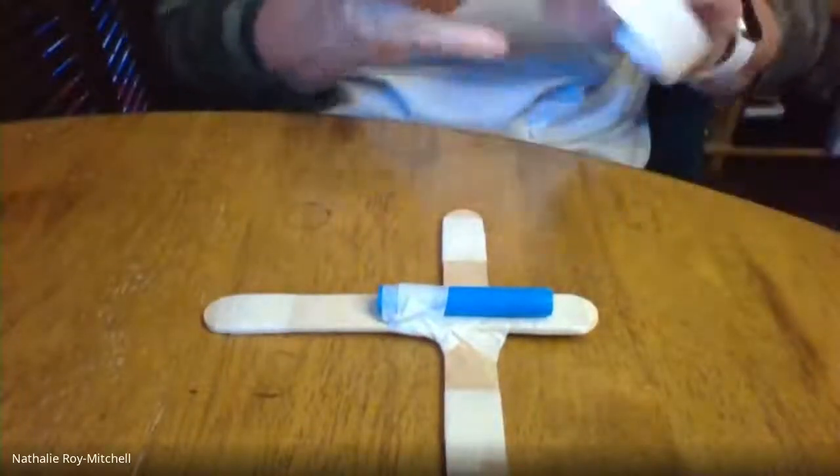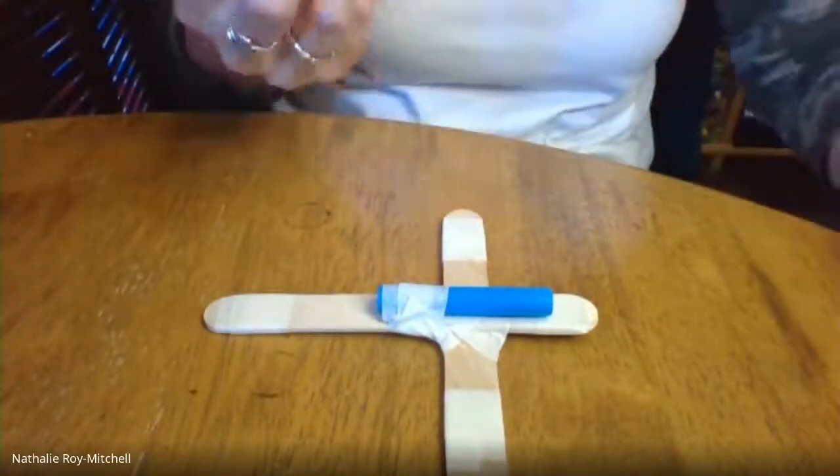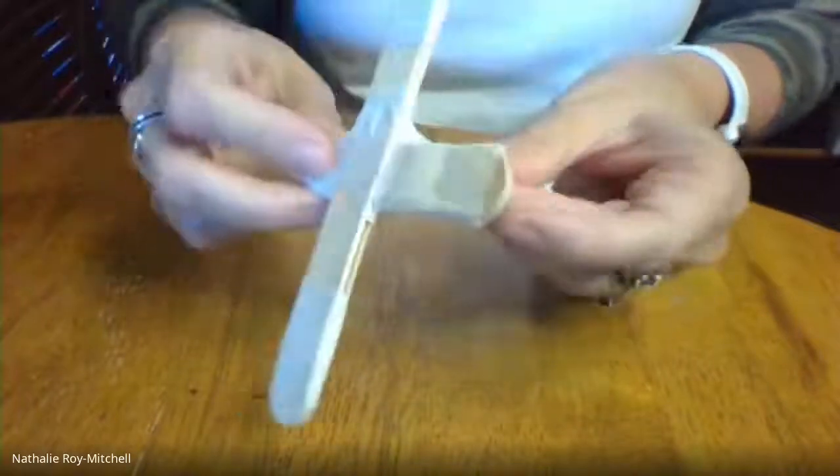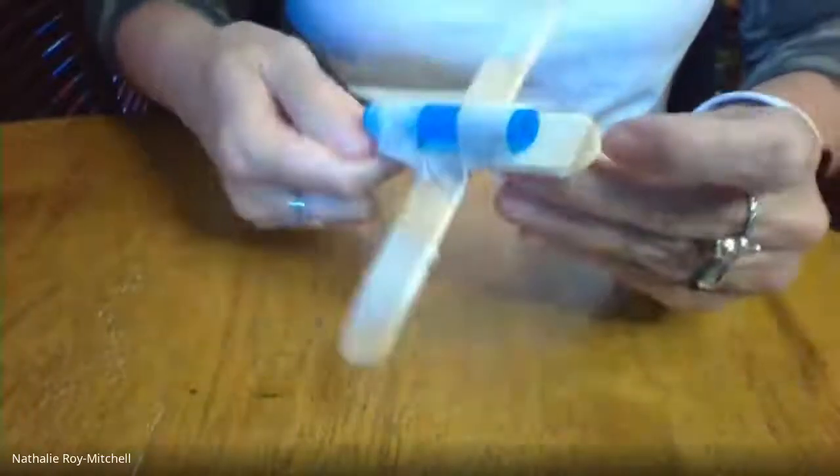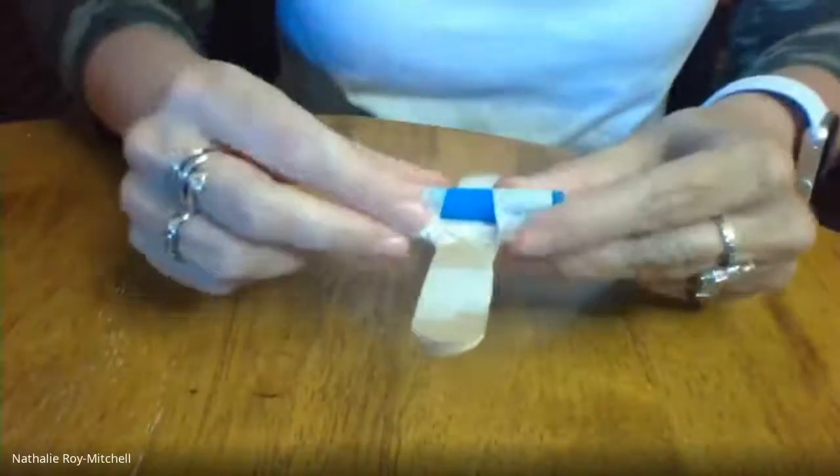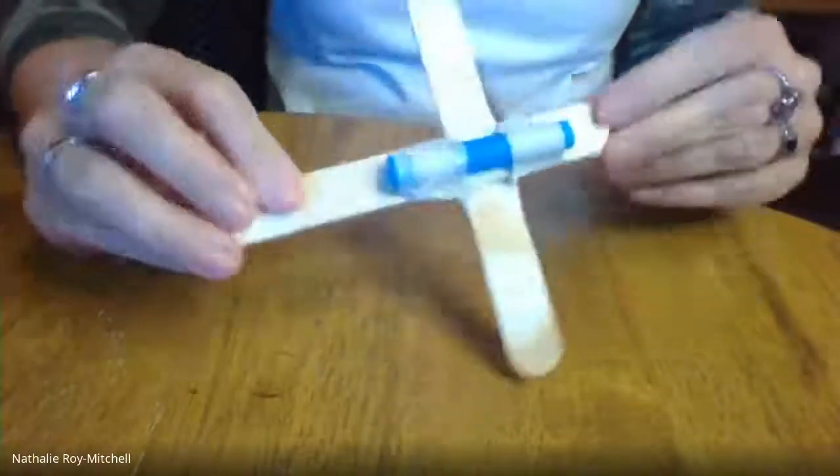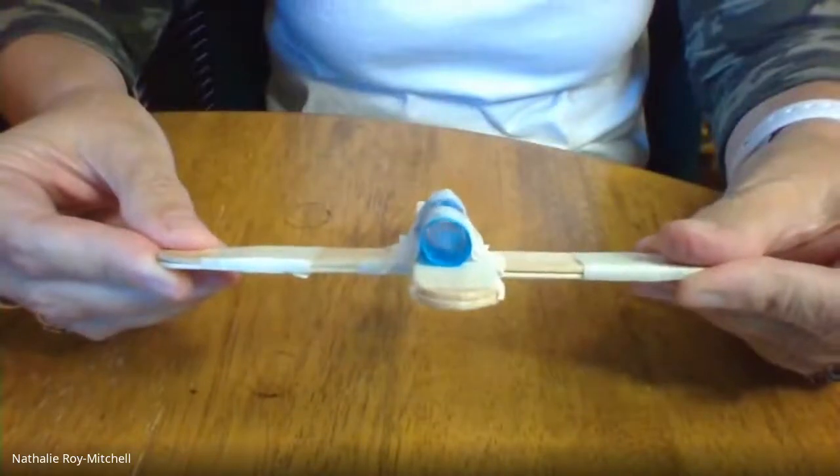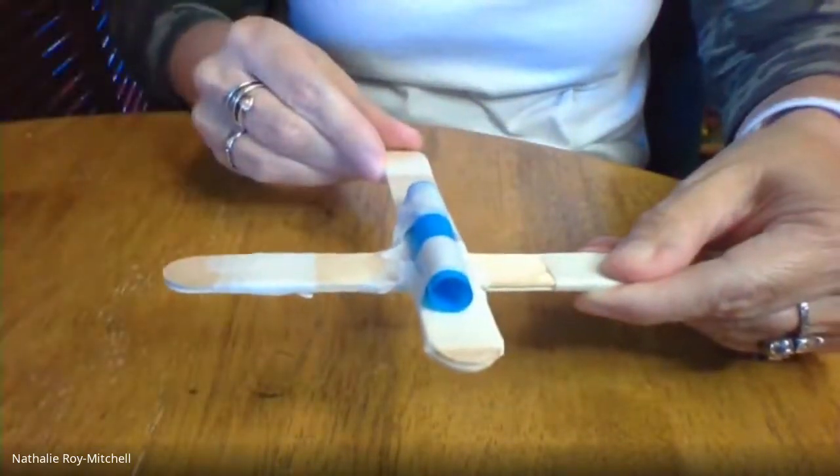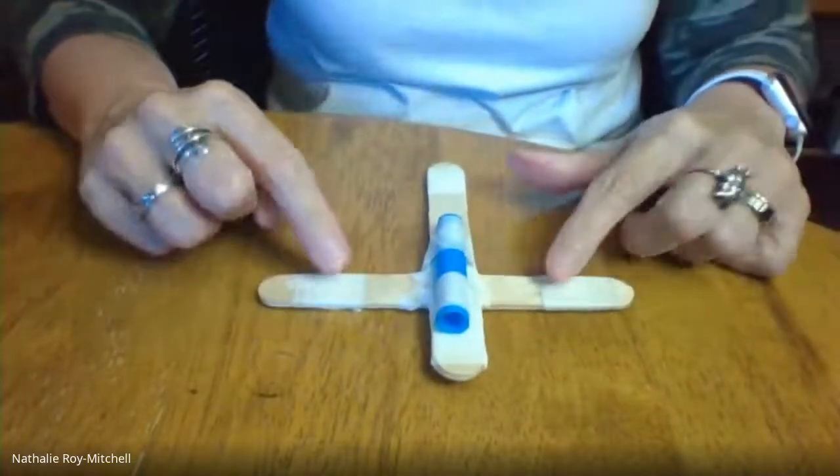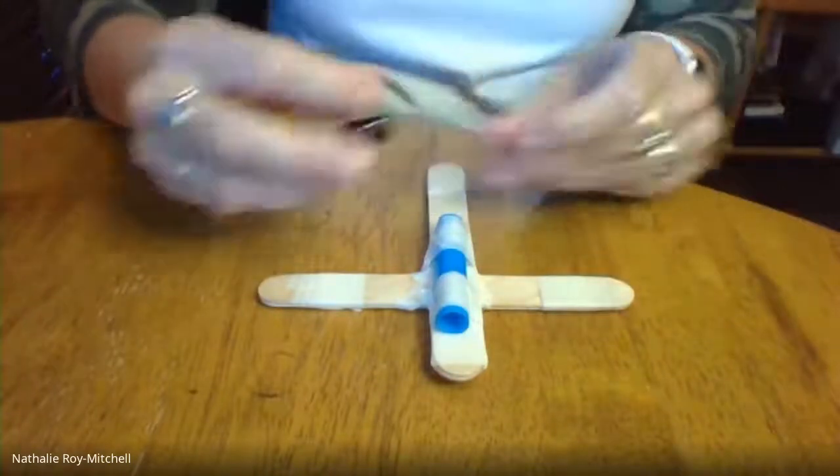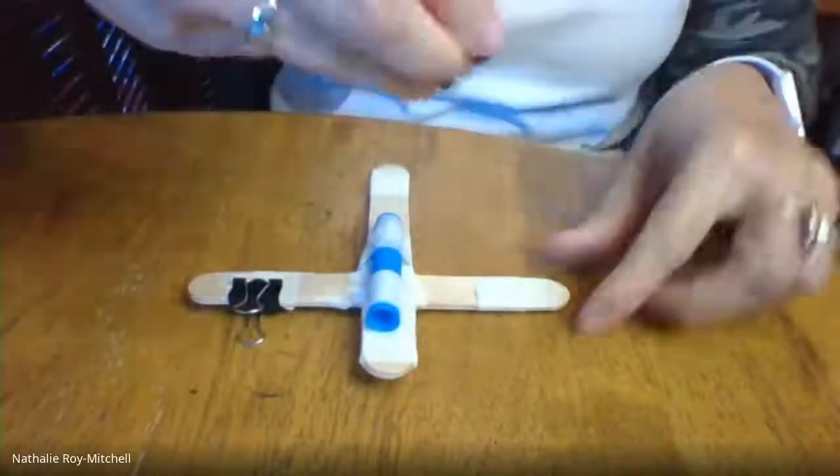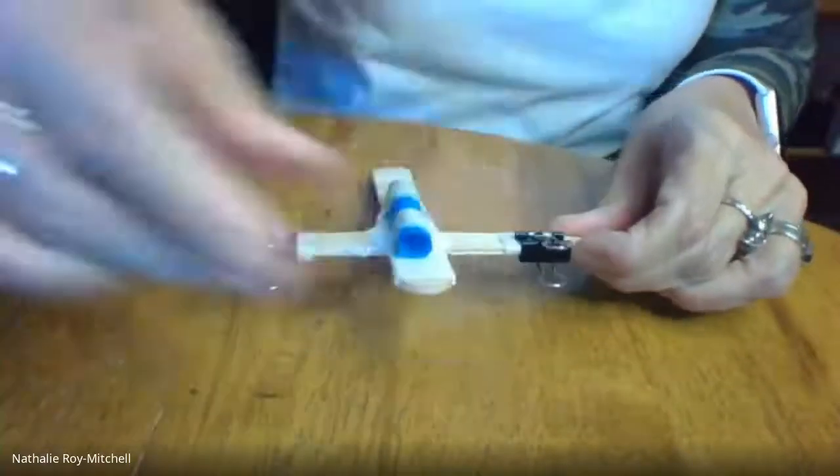And we are going to do the same thing on this end top part. You don't need much tape for this. This is what it ends up looking like when you are done. This is going to be our guide for the ammunition. Now let's work on the part that is going to give our ammunition some force. We are going to take our two binder clips and just attach them very simply to the bottom base of our scorpion. Like so.